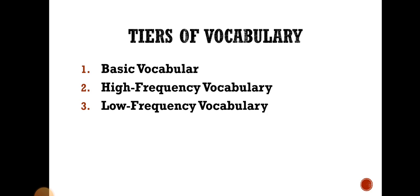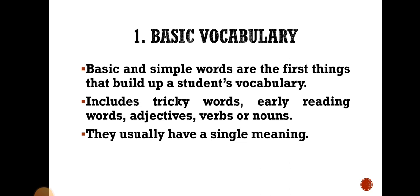Next are the tiers of vocabulary — the stages of vocabulary. Just as we discussed, with the passage of time and growing age, vocabulary also grows. There are three categories: number one, basic vocabulary; number two, high frequency vocabulary; number three, low frequency vocabulary.